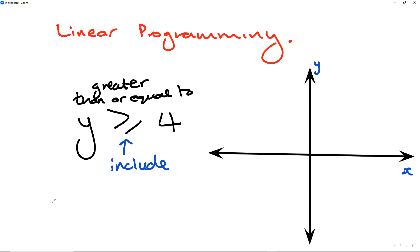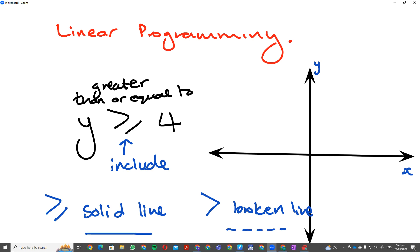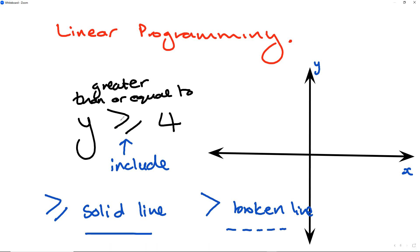When we include a number — greater than or equal to — we use a solid line. When it's strictly greater than, we use a broken line. A broken line looks like this; a solid line looks like that. Greater than or equal to means we grab 4 from the y-axis and draw a solid line.